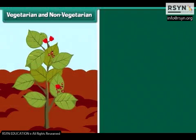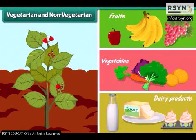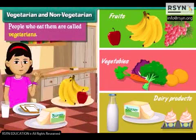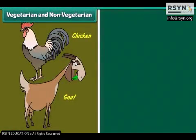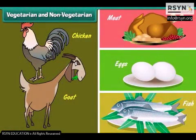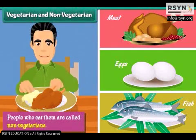Plant products like fruits, vegetables and dairy products are vegetarian food. People who eat them are called vegetarians. Animal products like meat, eggs and fish are non-vegetarian food. People who eat them are called non-vegetarians.